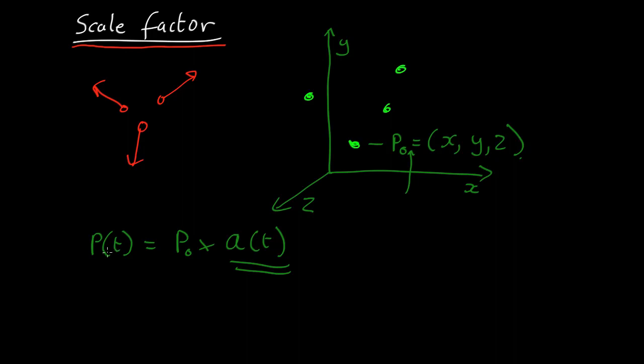So this terminology, the brackets t after it, means that this is something that depends on t. It's a function of t. So the position as a function of t equals the position right now times the scale factor, this constant a, which is also a function of t.